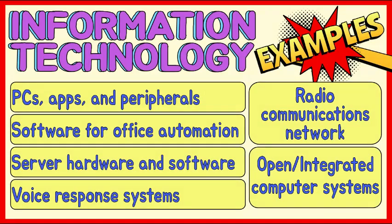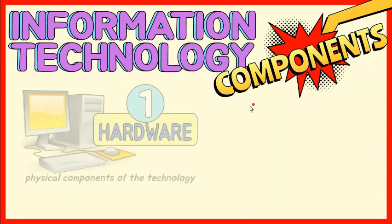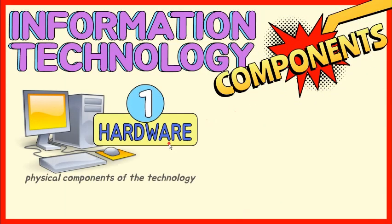These examples suggest that there are four components of information technology. Let's discuss each one of them. Hardware is the physical component of the technology. Computers, keyboards, disk drives, printers, iPads, scanners, and flash drives are all examples of it.